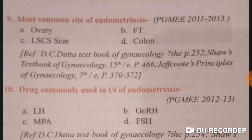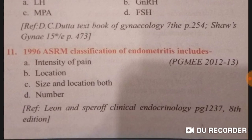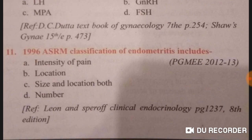The most common site of endometriosis is the ovary — option A is right. Drugs commonly used in treatment of endometriosis are GnRH analogues and MPA, so options B and C are the answer. The 1996 ASRM classification of endometriosis includes both size and location — option C is right.